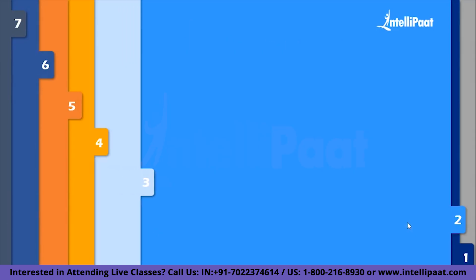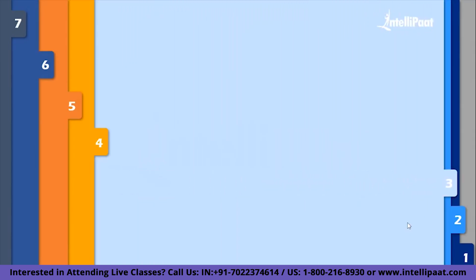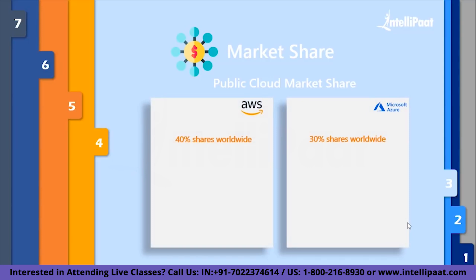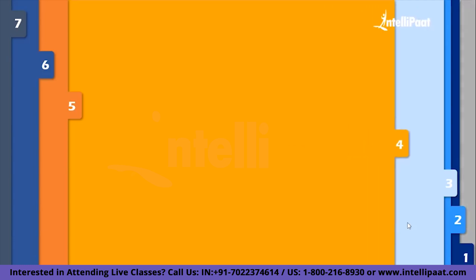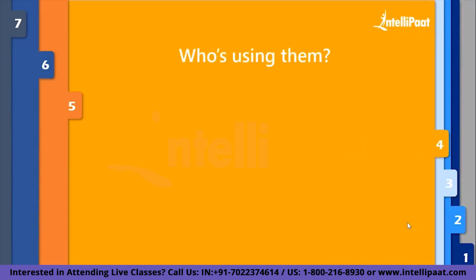Talking of the next factor, that is the market share — if we talk about market share, AWS is having 40% of the public cloud market shares worldwide, whereas Azure is having 30%. An interesting fact to notice here is that there is no other cloud provider that lies between these two numbers in terms of public cloud market shares, making AWS first and Azure in second place. What we can conclude from this is that AWS obviously has a bigger community support and trust across its clients.